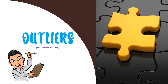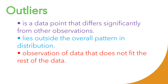What are outliers? Outliers can be described as a data point that differs significantly from the other observations. It could also be something that lies outside the overall pattern in distribution, or an observation of data that does not fit the rest of the data. Outliers are data that somehow affects the measures of central tendency — they are the ones that sometimes cause error to our statistical values.